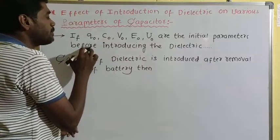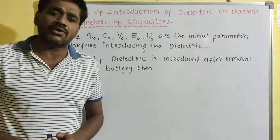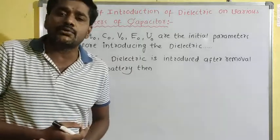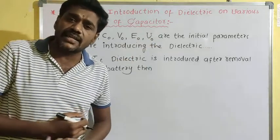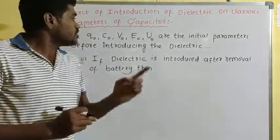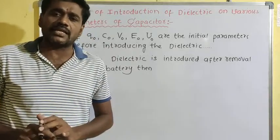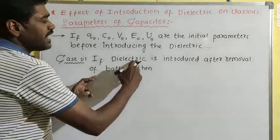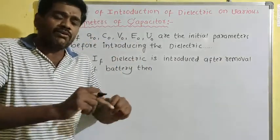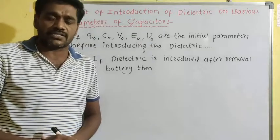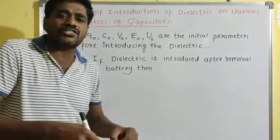The dielectric is a material which increases the capacitance — we have already discussed this. When the dielectric is introduced between the plates of the capacitor, we need to determine whether electric field, energy, voltage, charge, and capacitance increase or decrease. There are two important cases: Case 1 — the dielectric is introduced after removal of the battery. Case 2 — the dielectric is introduced while keeping the battery connected.